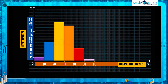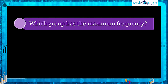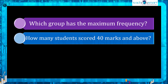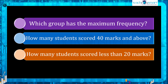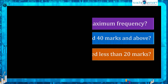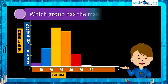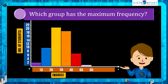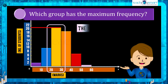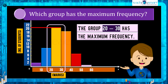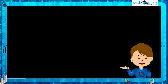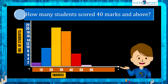With the help of this histogram we can easily find answers to questions like: how many students scored 40 marks and above, and how many students scored less than 20 marks. Let's answer these questions. Our first question is: which group has the maximum frequency? The group 20 to 30 has the maximum frequency.